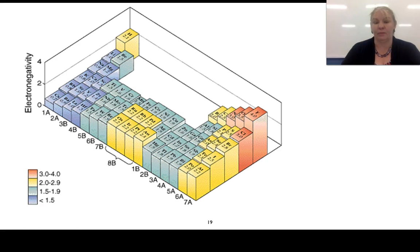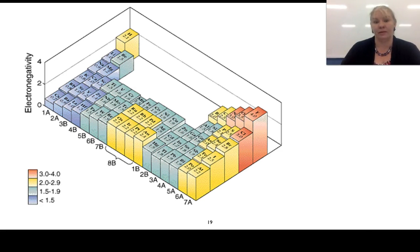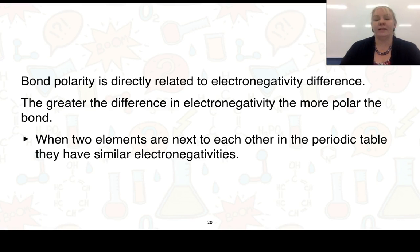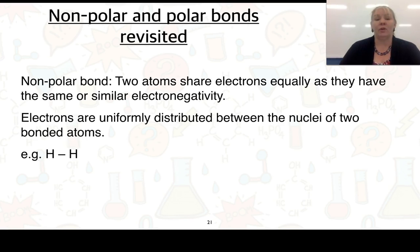We can see the trend arrow on the periodic table. This shows the electronegativity values — a much bigger version of the Pauling scale covering all elements, so you can refer back to this if needed. The greater the difference in electronegativity, the more polar the bond will be. Two elements next to each other in the periodic table will have similar electronegativities, giving non-polar bonds where electrons are shared equally.